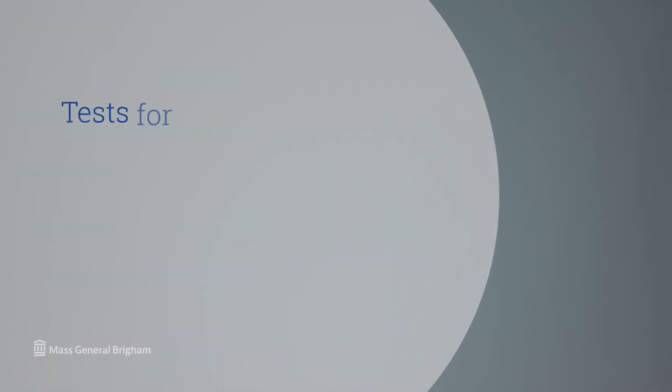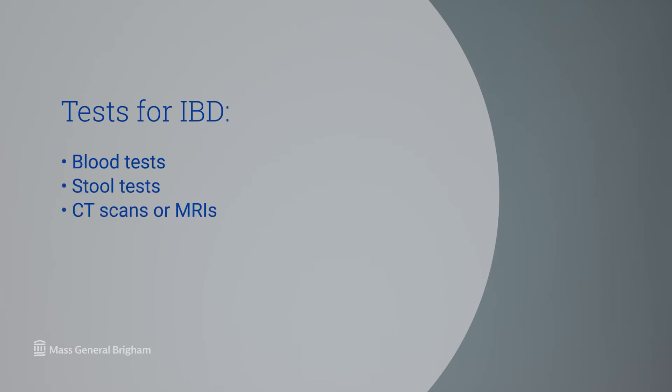If you're diagnosed with IBD, the first stage is to understand the severity of IBD and the impact it's having on your body. That is often done through a combination of blood tests and stool tests. CT scans or MRIs are also helpful in picking out certain complications such as strictures, which are narrowing in the small intestine, or fistulae, which are communications between different parts of the small intestine.